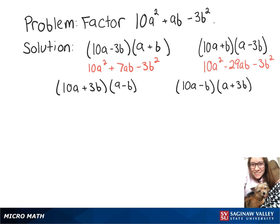So now multiplying this one out, we get 10a squared minus 10ab plus 3ab gives minus 7ab minus 3b squared. So that's not the one.